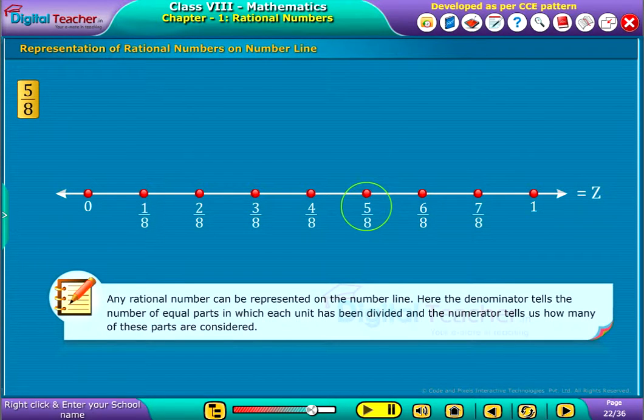Note, any rational number can be represented on the number line. Here, the denominator tells the number of equal parts in which each unit has been divided and the numerator tells us how many of these parts are considered.